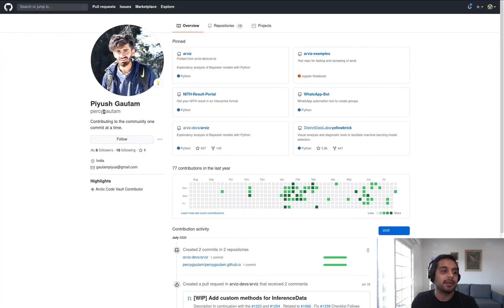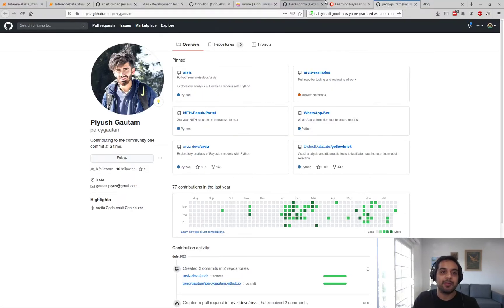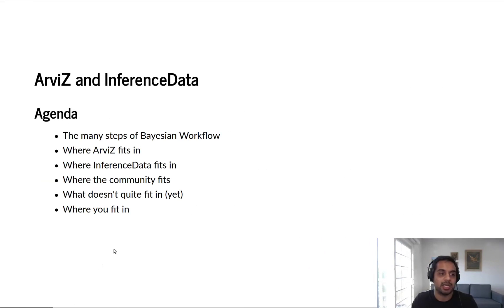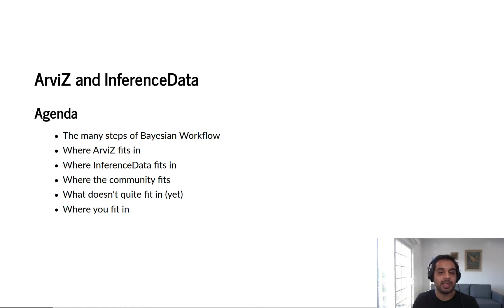We have Piyush as well. Piyush is a Google Summer of Code student that is helping us out by expanding the capability of inference data. Inference data is largely going to be the topic of this talk. Let's jump into the agenda. We're going to talk about all the steps that are in a Bayesian workflow, where ArviZ fits in, and then we're going to spend most of our time talking about inference data, where that fits into the community, where we can improve with it, and where you could use inference data and ArviZ in your day-to-day Bayesian workflow.